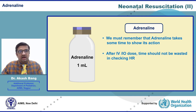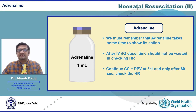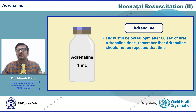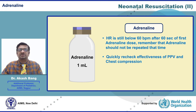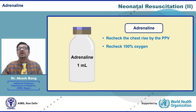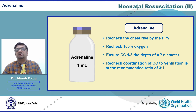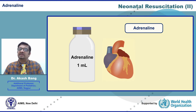Remember that adrenaline takes some time to show its action. After the IV or IO dose, time should not be wasted checking the heart rate — you must continue chest compression and positive pressure ventilation at a 3:1 ratio and check the heart rate only after 60 seconds. If after 60 seconds the heart rate is still below 60, quickly recheck effectiveness: check chest rise with PPV, confirm 100% oxygen, ensure chest compression is at one-third the AP diameter, and recheck that the coordination of compression to ventilation is at the recommended 3:1 ratio.